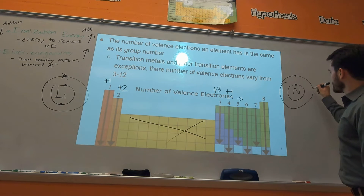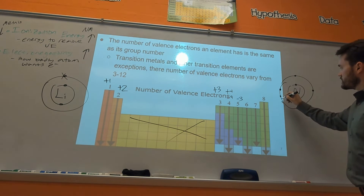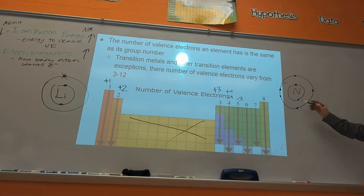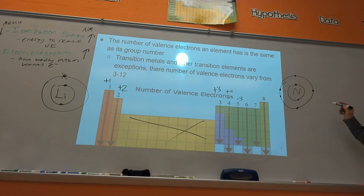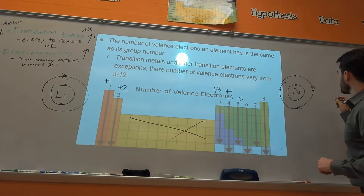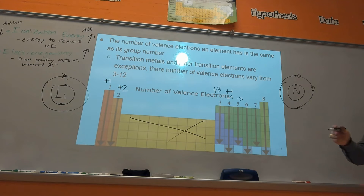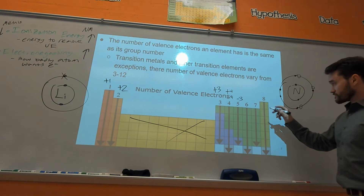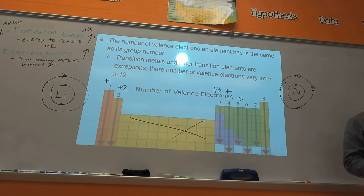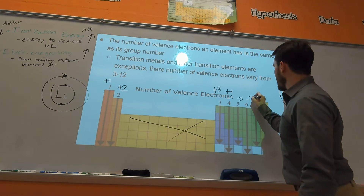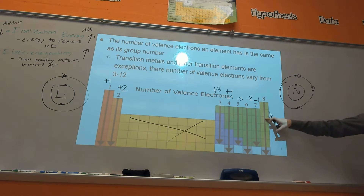Nitrogen has two electrons in the first shell and five valence electrons. Why would this become a minus three ion and not plus five? It's easier to add three electrons than to lose five. If you gain three electrons you're then a minus three charge. Really important concept for understanding chemistry. So groups five, six, seven form negative ions: minus three, minus two, minus one.